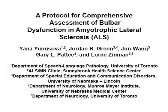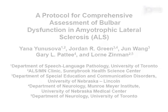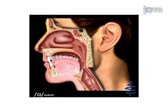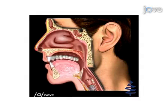Speech, a function controlled by bulbar motor neurons, is arguably one of the most complex motor acts performed by humans. Speech is a product of coordinated movements of the respiratory, phonatory, resonatory, and articulatory motor subsystems.